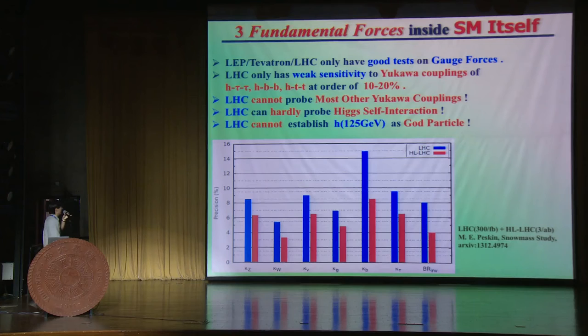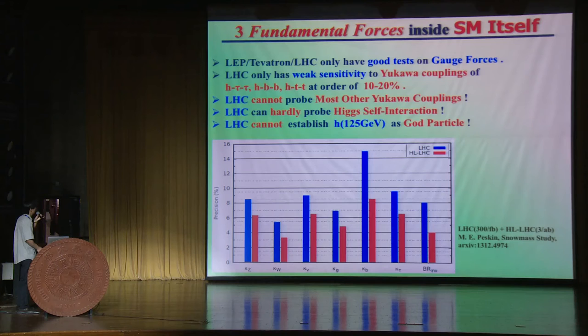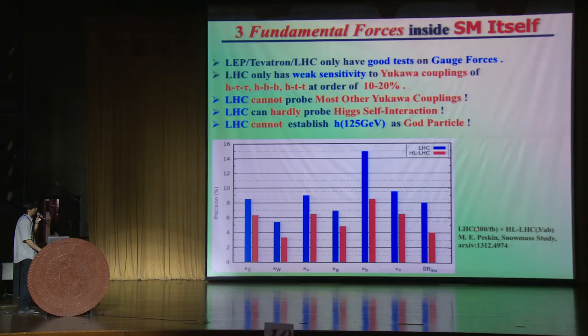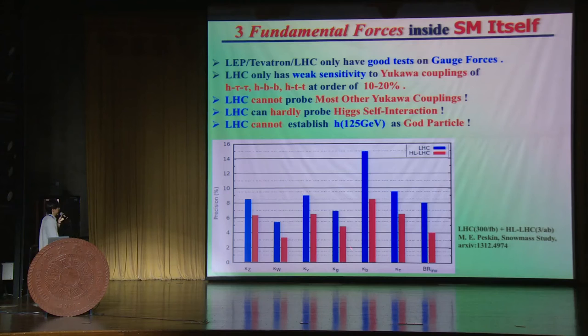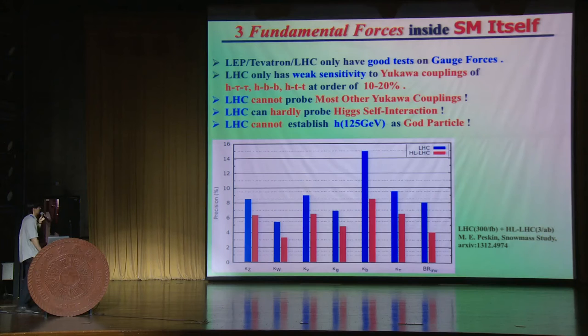Let me summarize the current status. The LHC has good tests for the gauge forces. After Run 2 with 300 inverse femtobarns of luminosity, or the high-luminosity LHC upgrade with a factor of 10 more data, gauge couplings can be tested to around 5 to 9%. However, for the fermion Yukawa couplings — like the bottom and top — it is somewhat 10 to 15%. In general, the certified fermion Yukawa couplings are much harder and have weaker sensitivities.